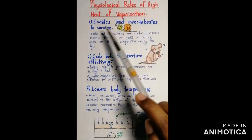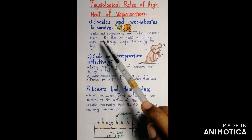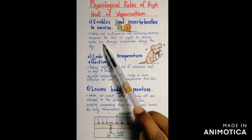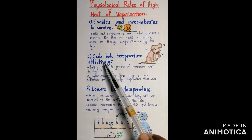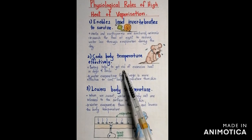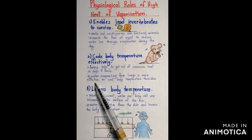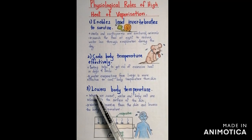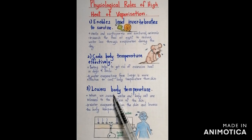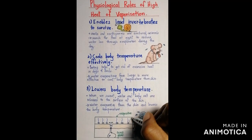The physiological roles of high heat of vaporization include enabling land invertebrates to survive — for example, snails and earthworms are nocturnal animals that search for food at night to reduce water loss through evaporation during the day. It also cools body temperature effectively; panting helps dogs and birds get rid of excessive heat. Water evaporating from the lungs is more effective at cooling body temperature than evaporation from the skin. When we sweat, water and body salts are released to the surface of the skin — sweat consists of 99% water.